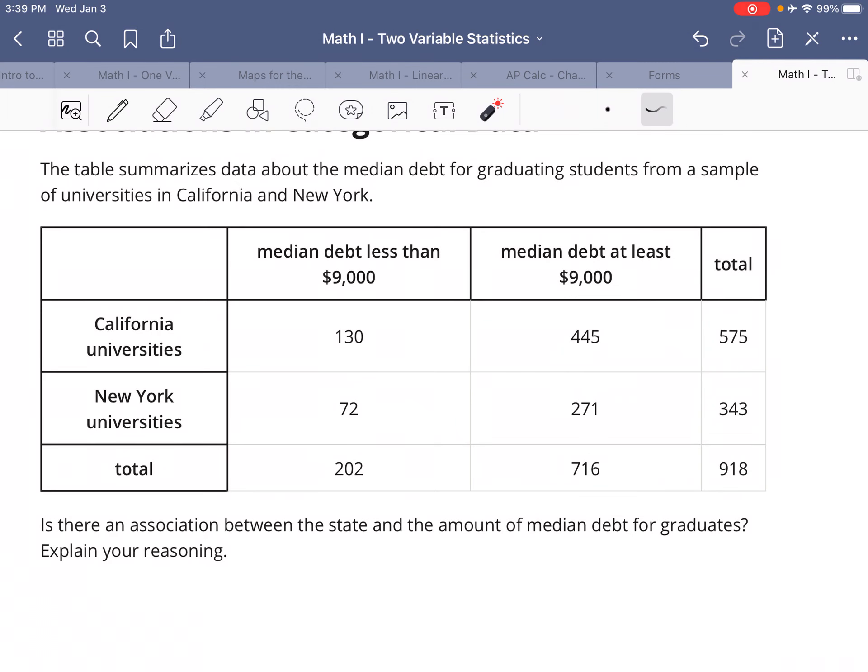Table summarizes data about the median debt for graduating students from a sample of universities in California and New York. Is there an association between the state and the amount of median debt for graduates? Explain your reasoning.